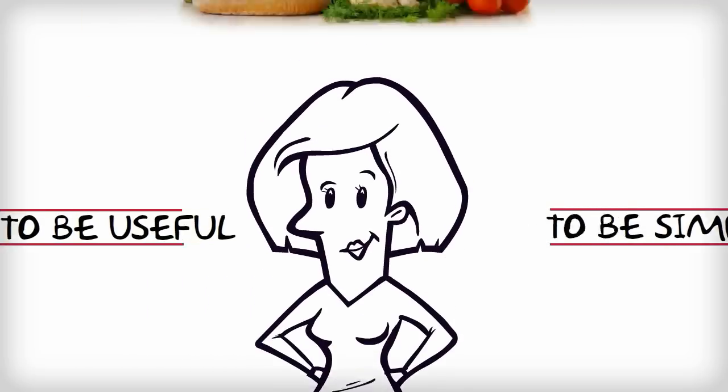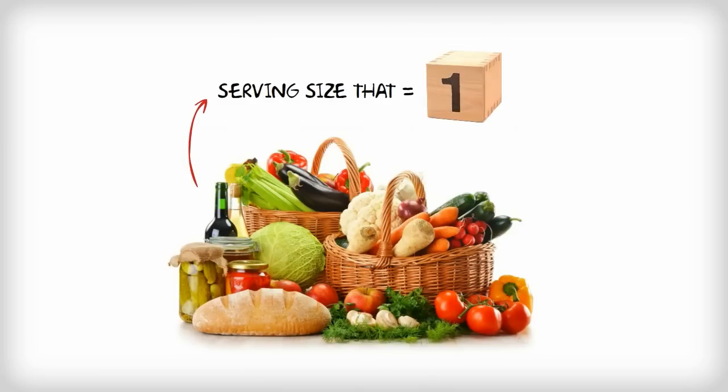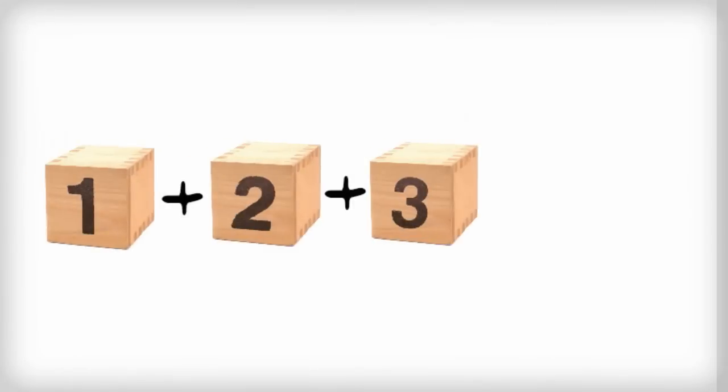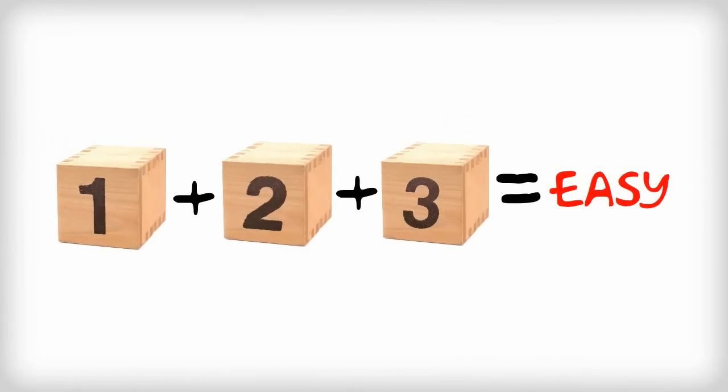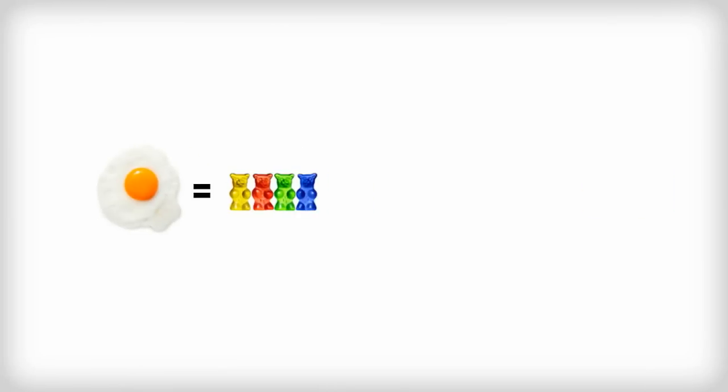Every food is given a serving size that is equal to one block, so remembering the block counts of your foods is easy. For example, one egg equals four gummies equals a half a banana equals one block.